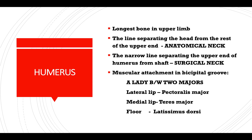Humerus — the strongest bone in the upper limb. The line separating the head from the rest of the upper end is the anatomical neck. The narrow line separating the upper end of the humerus from the shaft is known as the surgical neck.